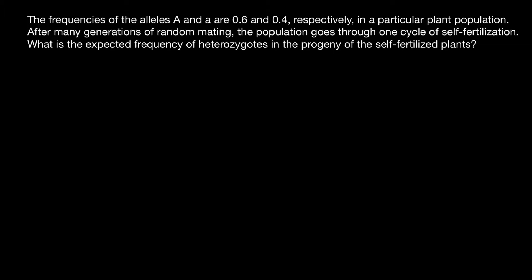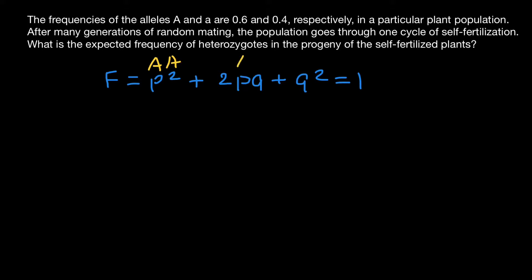In order to solve this problem, all we have to know is just the Hardy-Weinberg formula, where frequencies of three genotypes — produced when we have two alleles in the gene pool — equal p² + 2pq + q², and all this equals one. p² represents the homozygous dominant genotype, 2pq represents the heterozygous genotype, and q² represents the homozygous recessive genotype.